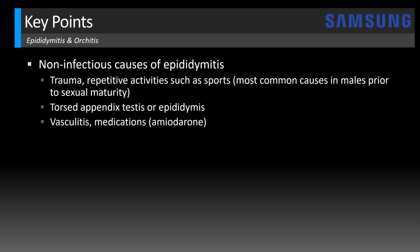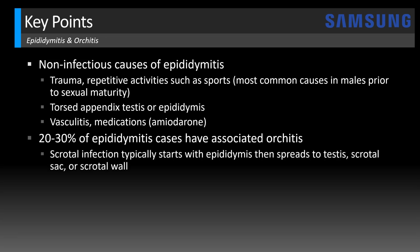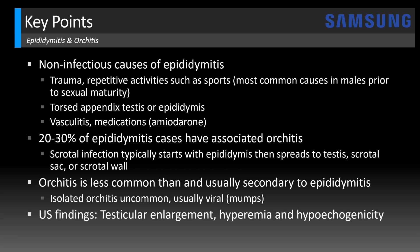Other causes include vasculitis and medications such as amiodarone, a cardiac antiarrhythmic agent. In 20 to 30 percent of cases epididymitis will have associated orchitis. Usually the scrotal infection starts in the epididymis and can then spread to the testis, the scrotal sac, or the scrotal wall — it's less common to have isolated orchitis, which is usually secondary to epididymitis. In children, orchitis is usually a viral etiology such as mumps. Ultrasound findings of orchitis are similar to epididymitis: enlargement of the gland, hyperemia, and hypoechogenicity of the parenchyma.